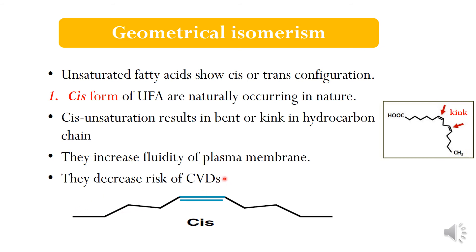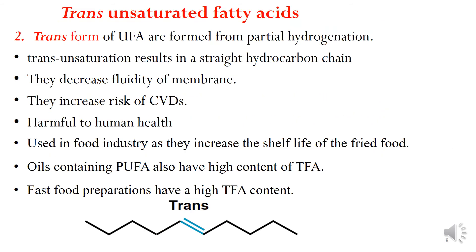The cis and trans unsaturated fatty acids — the second form of geometrical isomerism is the trans form. The trans form of unsaturated fatty acids is formed from partial hydrogenation, which may be natural or unnatural. Trans unsaturation results in a straight carbon chain, as you can see here. They decrease the fluidity of the membrane, making the membrane more rigid.